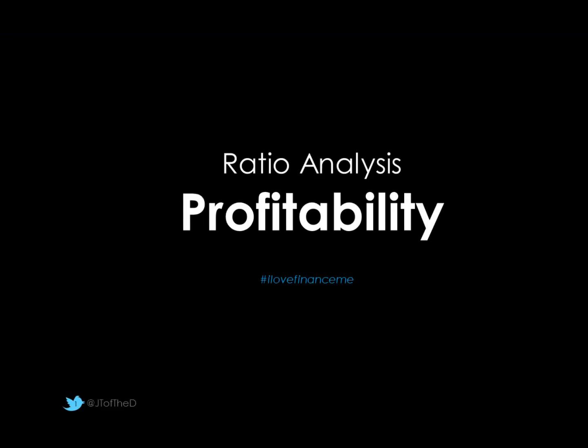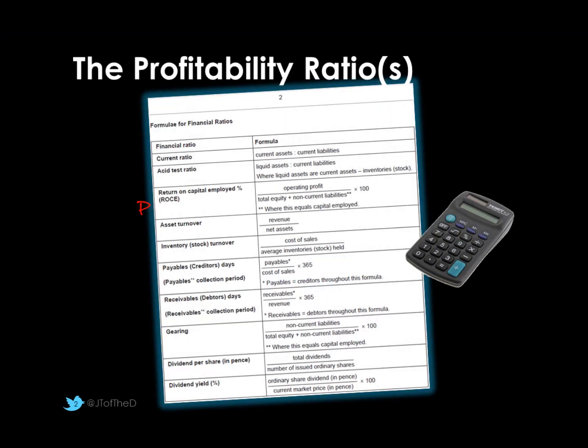This tutorial looks at the ratio analysis concept of profitability. Profitability comes up in many exams at different levels. In A2 business, the exam paper will include the formula for return on capital employed — that's the only one shown on the paper. At AS business, we also look at profitability margins: net profit and gross profit margins. These can be used in an A2 exam and are required at AS level, though they wouldn't appear on the A2 BUS3 paper itself.